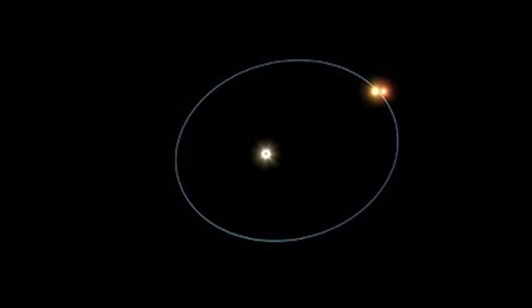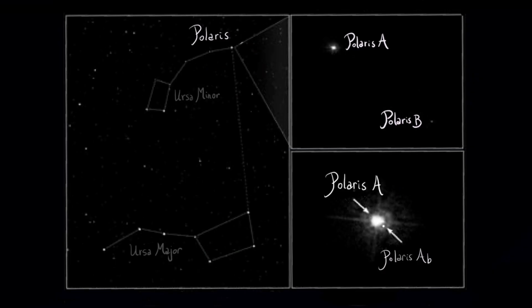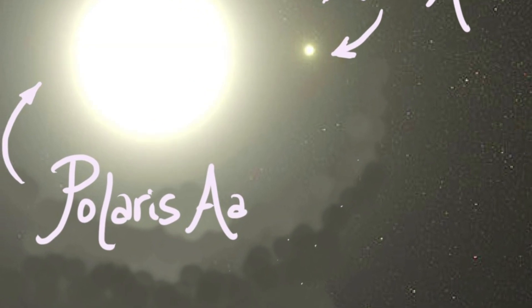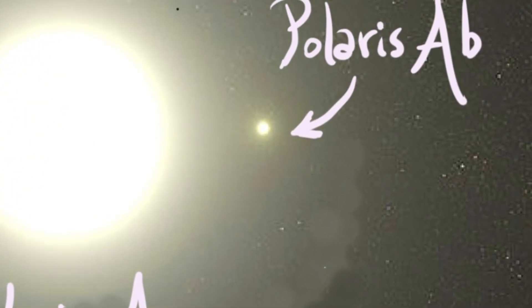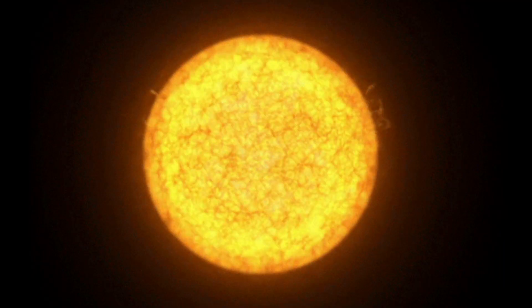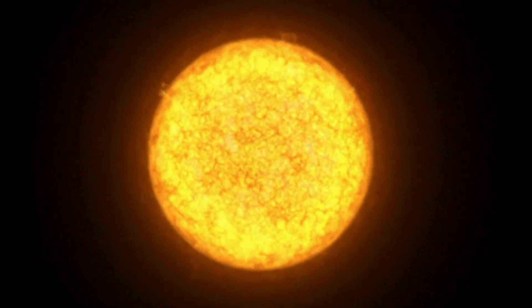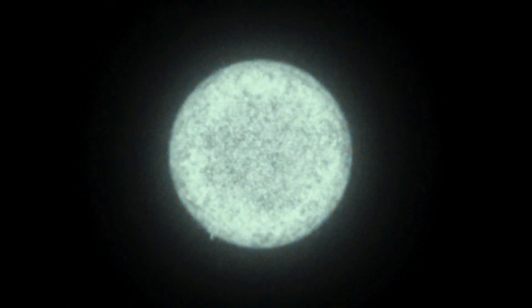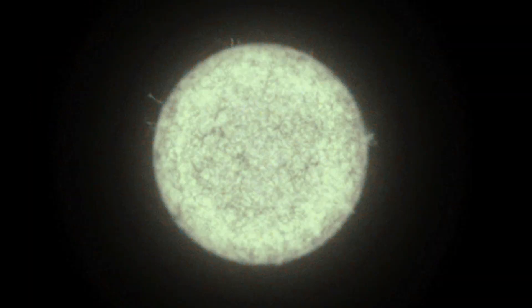In fact, Polaris is a triple star system, composed of three stars orbiting each other. The brightest one is a so-called supergiant star. This huge star is indeed almost 40 times larger than our Sun and more than a thousand times brighter. But its brightness is not constant. It fluctuates every four days.